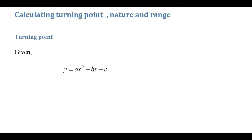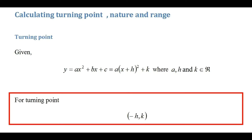If you're given a quadratic equation y equals ax squared plus bx plus c, the first step is you need to complete the square of the quadratic. If you're not familiar with completing the square, I encourage you to watch the previous video. We write it in the form a(x+h)² + k. Once you've done that, the coordinates of the turning point are given by (-h, k), where minus h is the x-coordinate and k is the y-coordinate.